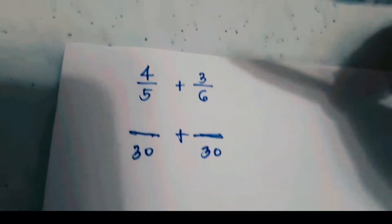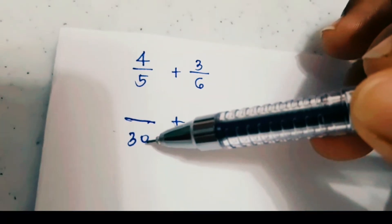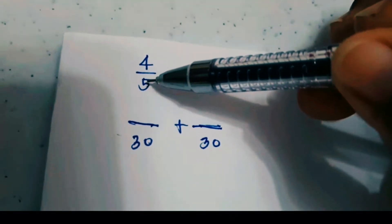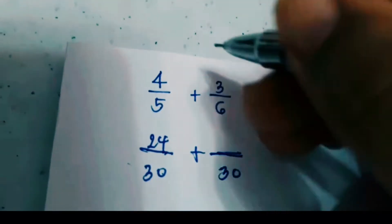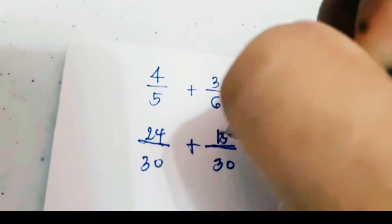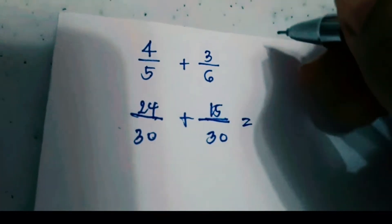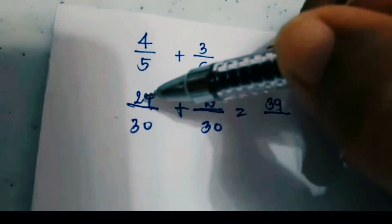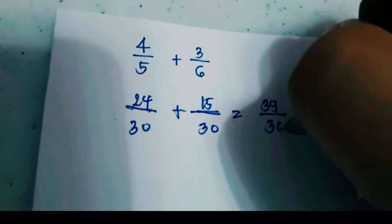Now, to convert these dissimilar fractions to similar ones, divide the LCD by the old denominator. 30 divided by 5 equals 6, times 4 equals 24. Then 30 divided by 6 equals 5, times 3 equals 15. Now you have 24 plus 15, the answer is 39. When you add fractions, you just add the numerators and copy the denominator, which is 30.